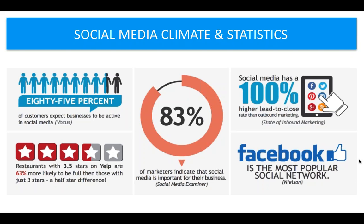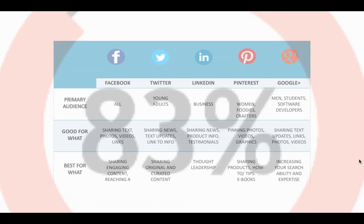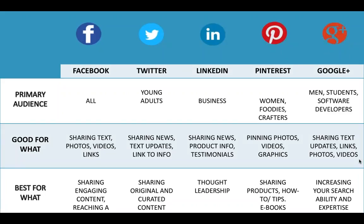I want to give you a couple of quick tips to have a good social strategy. The first is to understand your social media audiences — what is each social network best for and who is it geared toward? Facebook is the most important one because it's the most popular currently. Its primary audience is all ages and it's really good for sharing texts, photos, videos, and links, but it's best for sharing engaging content and reaching a larger audience. Twitter is great for young adults. LinkedIn is great for business, so if you have a business-to-business kind of business, LinkedIn would be a great platform.